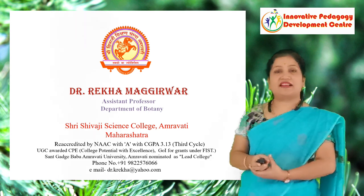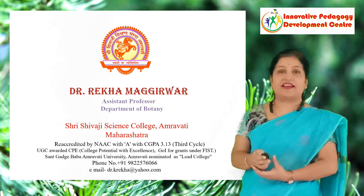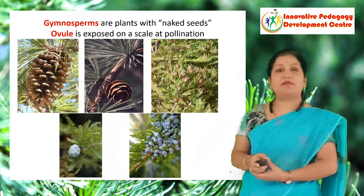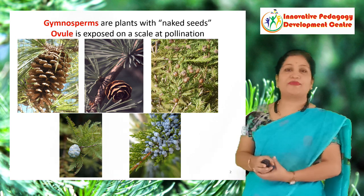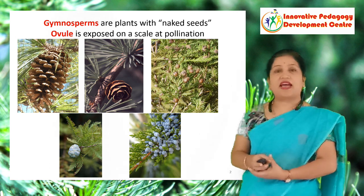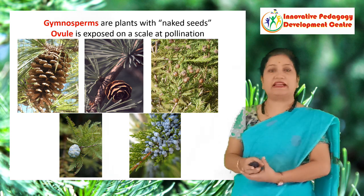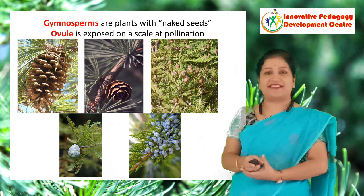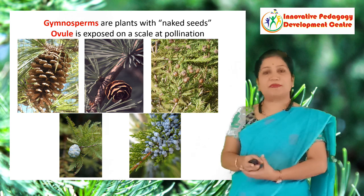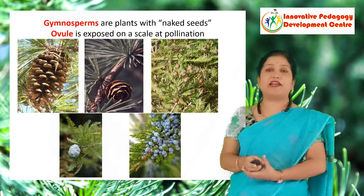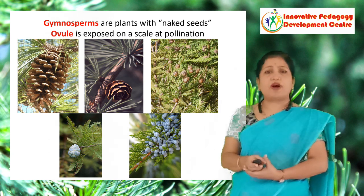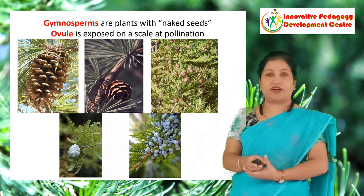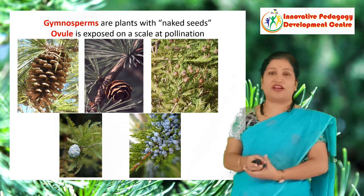Let us discuss about the life cycle of Pinus. Before that, one must know about the gymnosperms. Gymnosperms have derived from the Greek words: gymnos means naked and sperma means seed — that is, plants with the naked seed. These gymnosperms evolved on our planet in the late Paleozoic era, about 265 million years before, and they flourished well in the Mesozoic era, the age of the dinosaurs.